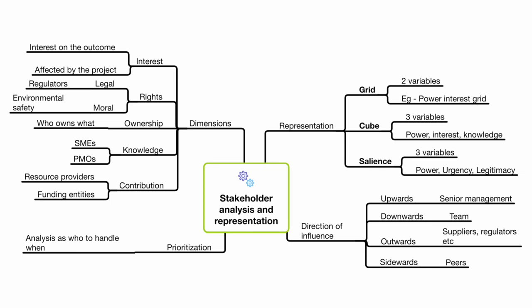To know who can be stakeholders, we can look at different dimensions. First is interest — who has an interest in the outcome of the project? For example, Apple's vendors, small accessories companies, YouTubers, bloggers who watch videos — all of those people are your stakeholders. Apple has to manage them because they make the company better, give feedback, and popularize Apple.